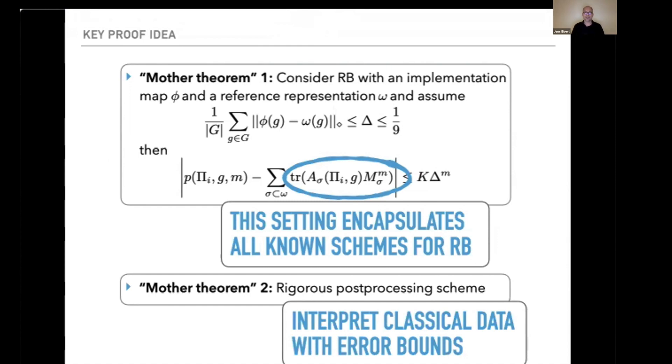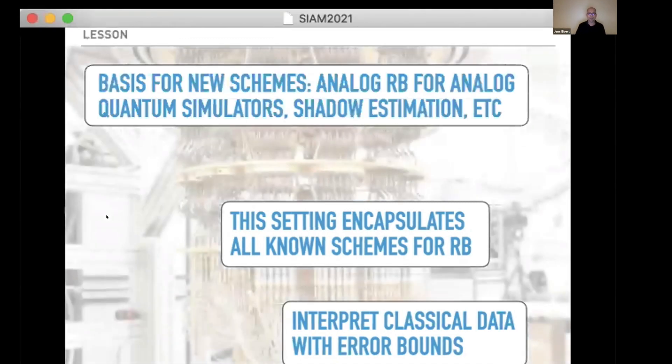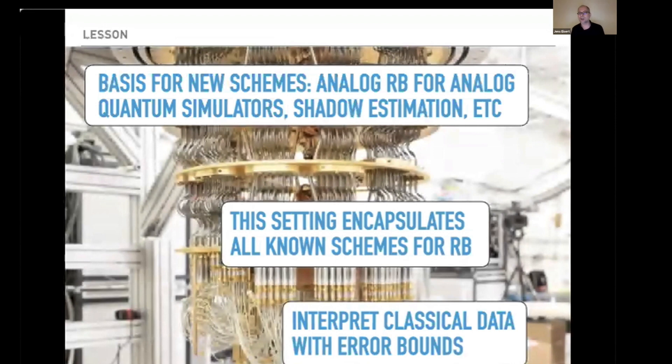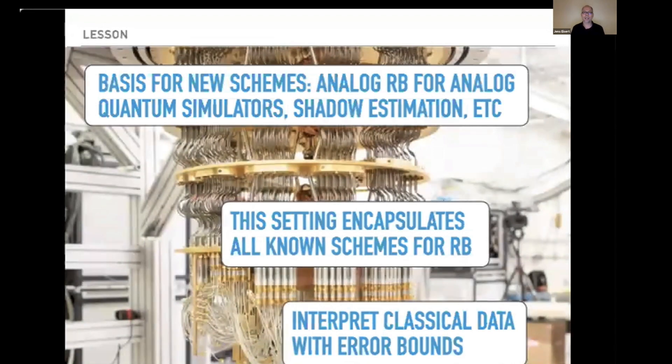We also have a second mother theorem on how to make use of the data and how one can isolate the single decay rates using ideas of signal processing and rigorous post-processing. The point is that one can interpret classical data with error bounds in a precise and rigorous fashion. This encapsulates all randomized benchmarking schemes and can also serve as a basis for new schemes. We're cooking up notions of analog randomized benchmarking for analog quantum simulators and shadow estimation based on this.